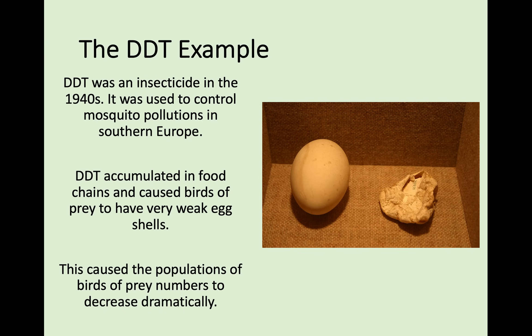One example of this is DDT, an insecticide used in the 1940s to control mosquito populations in southern Europe. It's quite a dangerous chemical with links to cancer. DDT accumulated in food chains and caused birds of prey to have very weak eggshells — on the left is an ideal eggshell, on the right one from a bird exposed to DDT. This caused far fewer birds of prey to hatch, leading to a massive decrease in their numbers in southern Europe, all traced back to a pesticide used on plants.